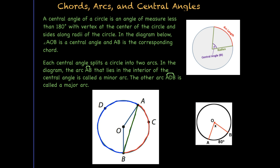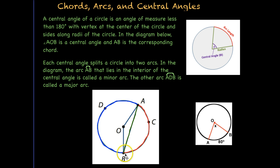Let's look at a central angle. A central angle of a circle is an angle of measure less than 180 degrees. Notice in this diagram, here's our central angle. It has a vertex at the center of the circle and the sides are radii of the circle. In the diagram below, angle AOB is our central angle. Notice that AB then is the corresponding chord. A chord intersects a circle on the inside in two places. The longest chord in a circle passes right through the middle, and that's a diameter, which turns the circle into two semicircles.